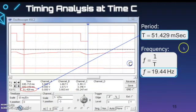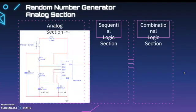Looking at time C, we see that same relationship again. The period is 51.429 milliseconds and the frequency is 19.44 hertz. We're seeing a decrease in frequency as the period increases.